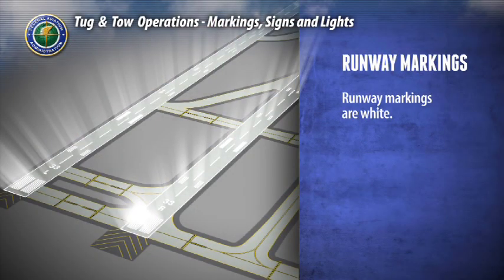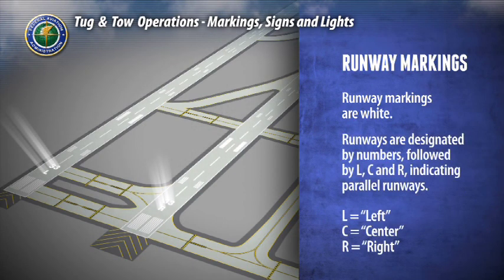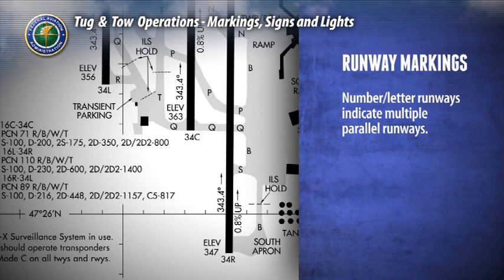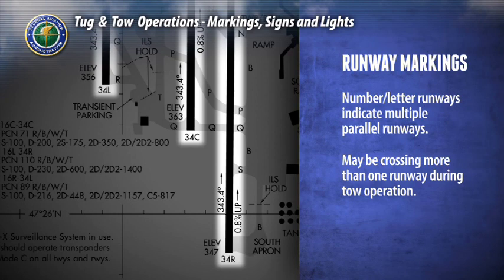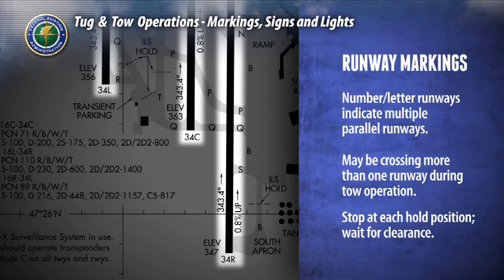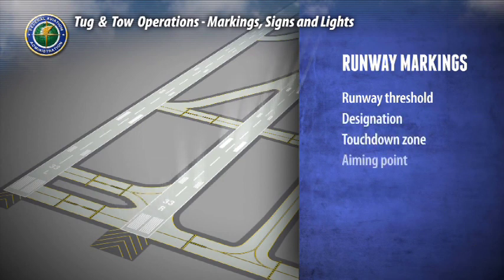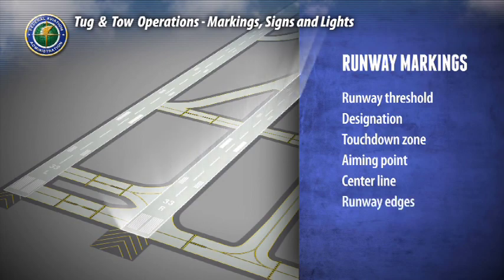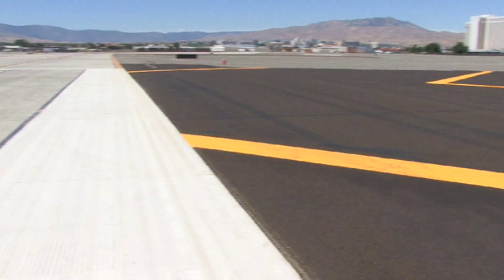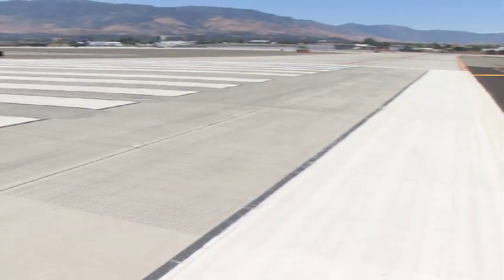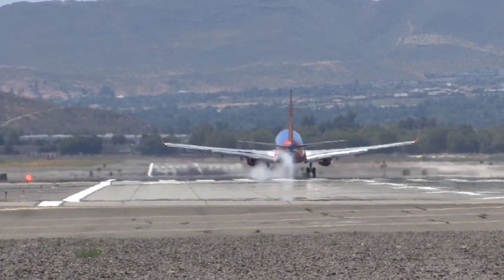All runway markings will be white. Runways are designated by numbers, and at some airports are followed by the letters L, C, and R, meaning left, center, and right. It's critical to recognize that a numbered runway designation followed by a letter indicates the presence of multiple parallel runways. Therefore, you may be crossing more than one runway and will have to hold at each runway hold position. You will not receive air traffic control instructions to cross all runways at once. Runway markings include runway threshold, designation, touchdown zone, aiming point, center line, runway edges, and distance markings. Most likely you will not encounter the majority of these markings as they are intended to help pilots land their aircraft.